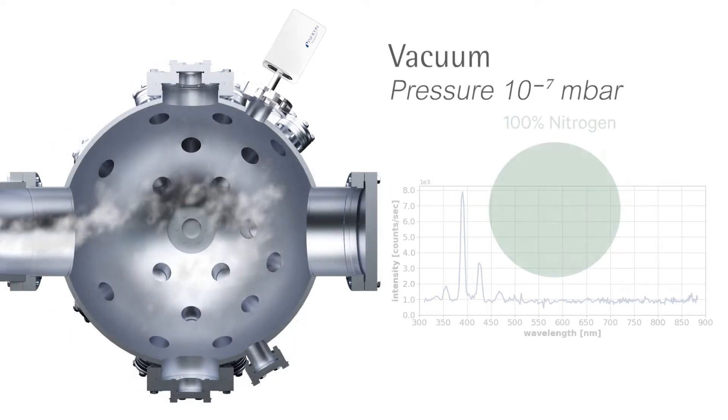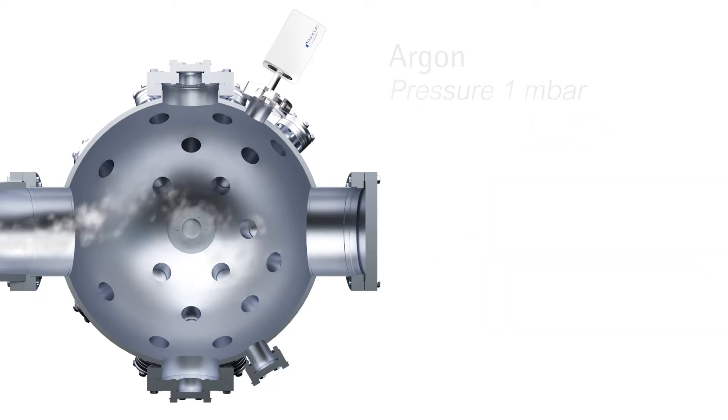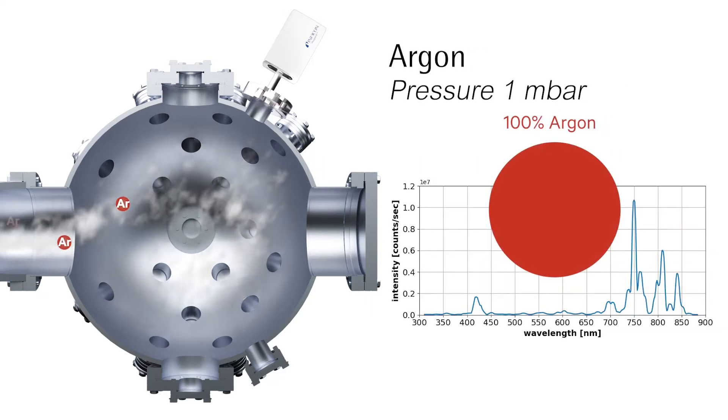At the beginning, the chamber is pumped down and Orgent detects nitrogen at a low pressure. Argon is filled into the chamber, whereupon an argon spectrum at a higher pressure is displayed.